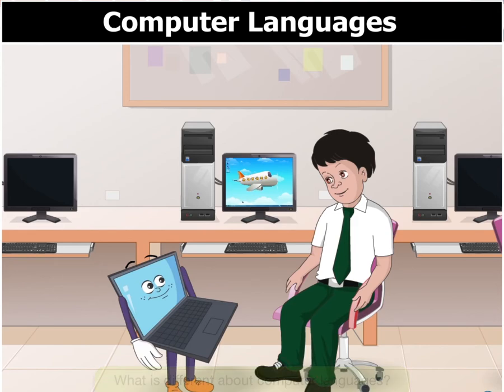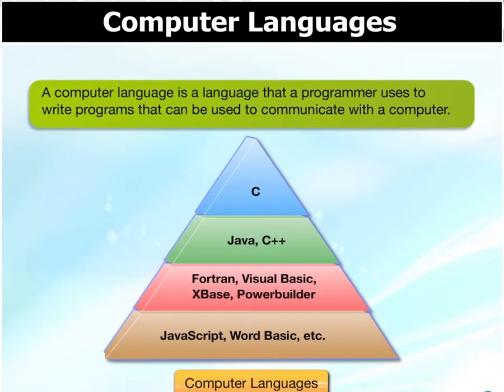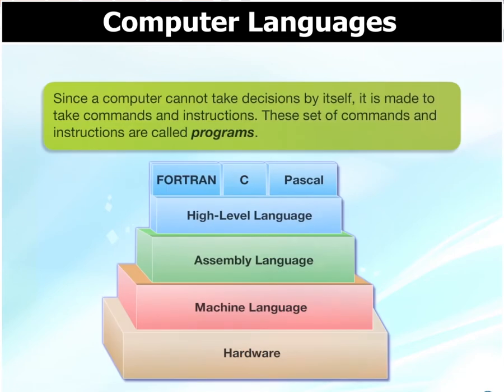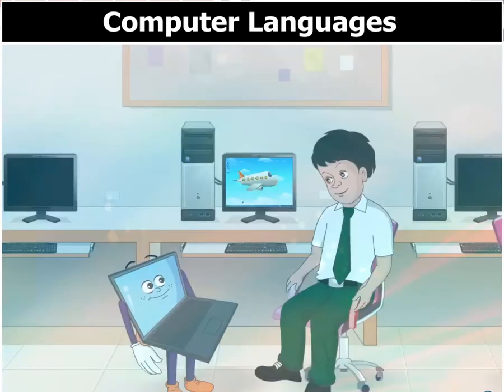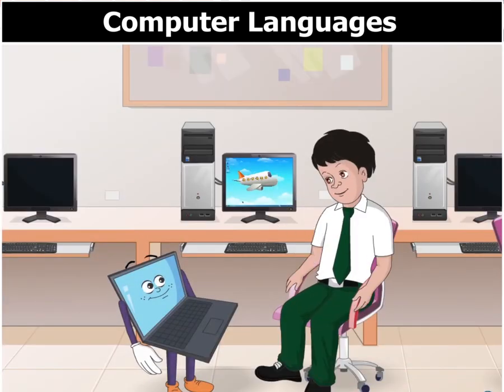A computer language is a language that a programmer uses to write programs that can be used to communicate with a computer. Since a computer cannot take decisions by itself, it is made to take commands and instructions. These set of commands and instructions are called programs.